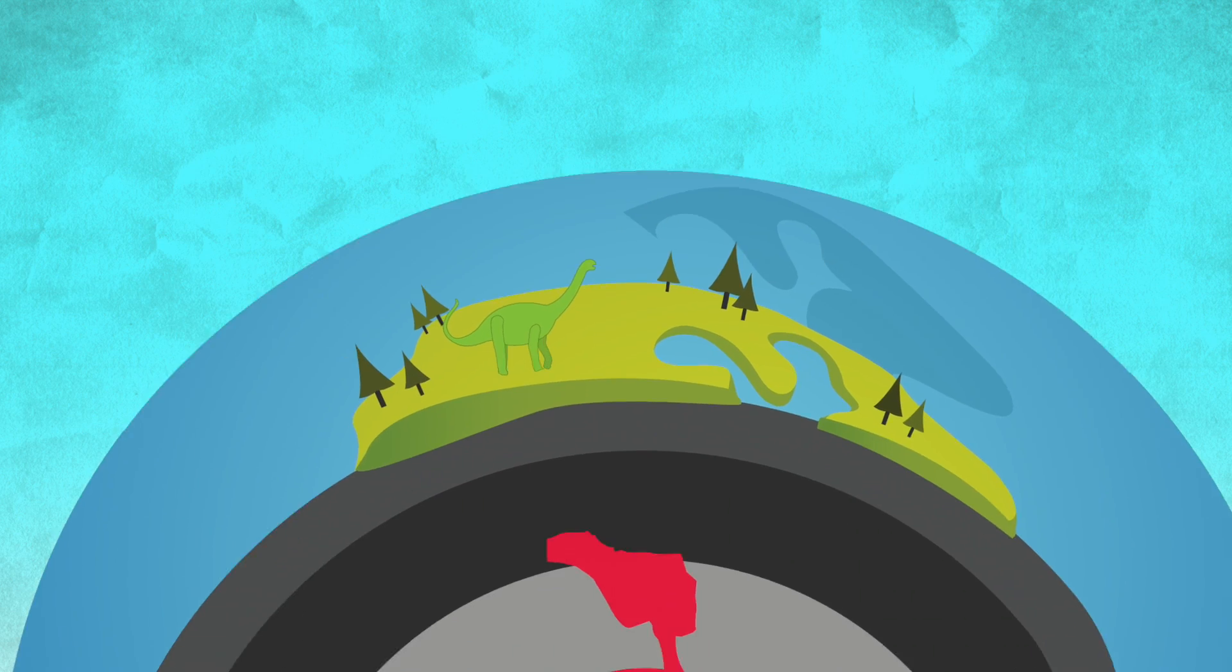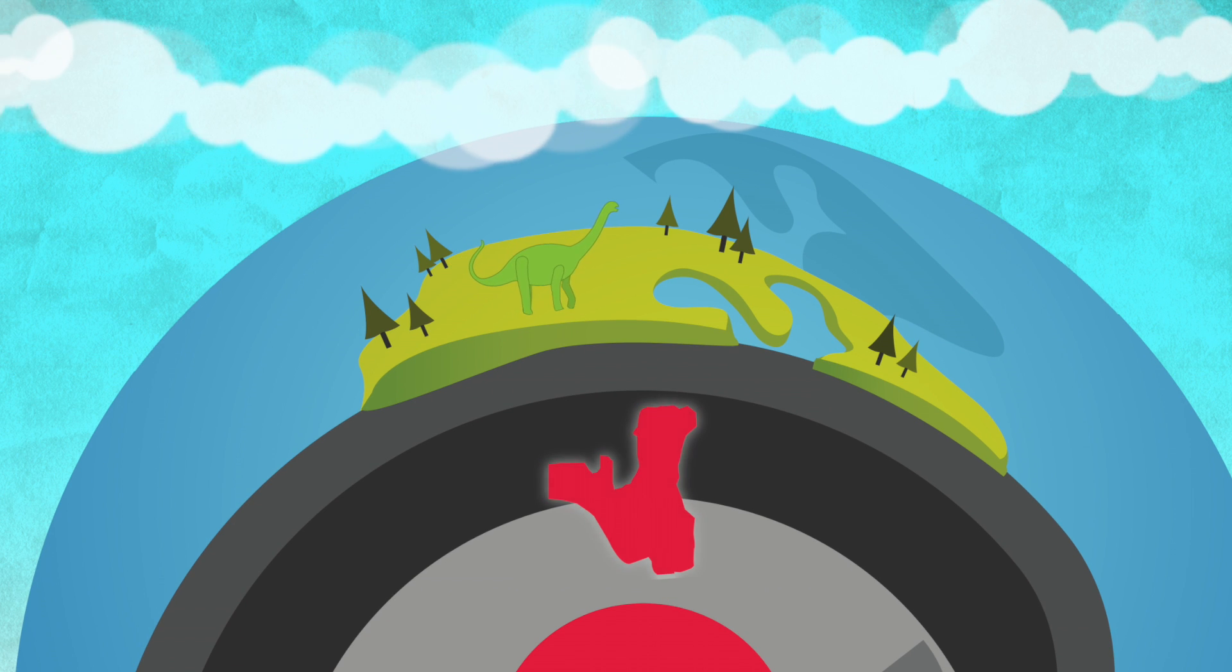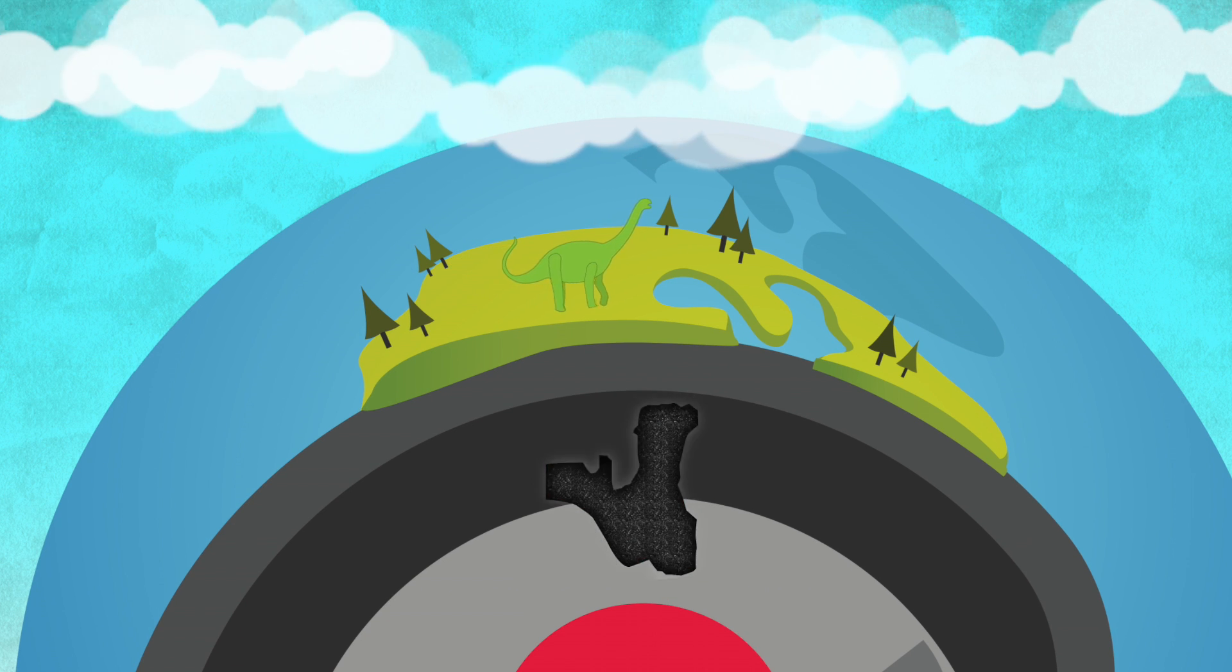One billion years ago, magma came up through the earth's crust, cooled and formed the present-day Eagle nickel and copper ore deposit.